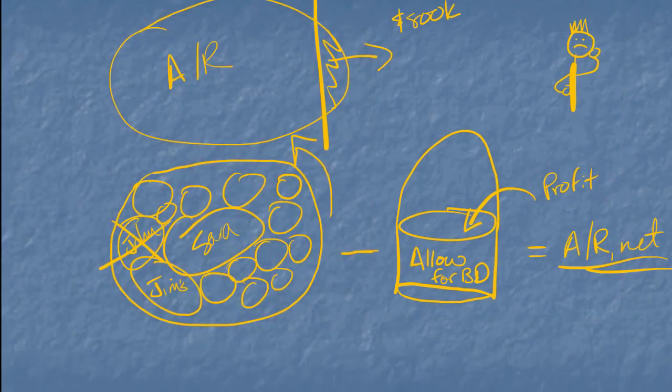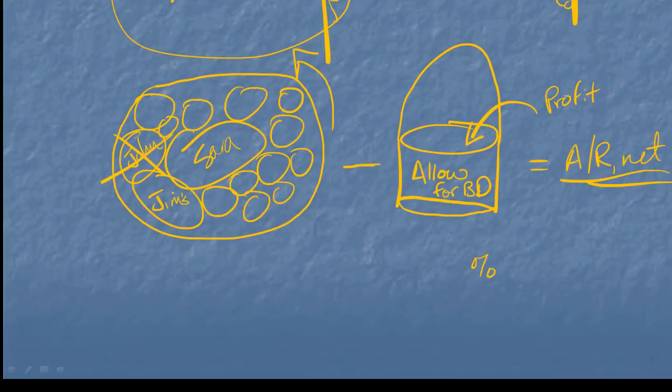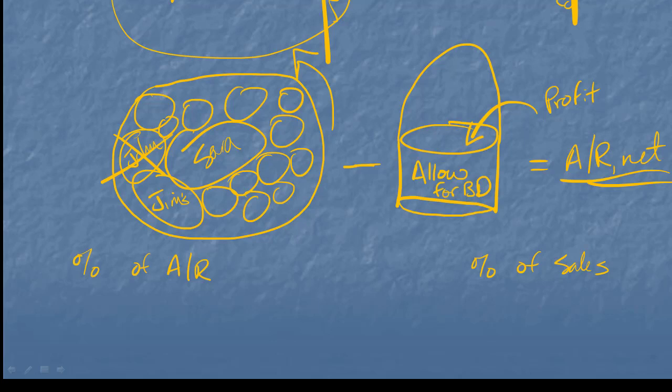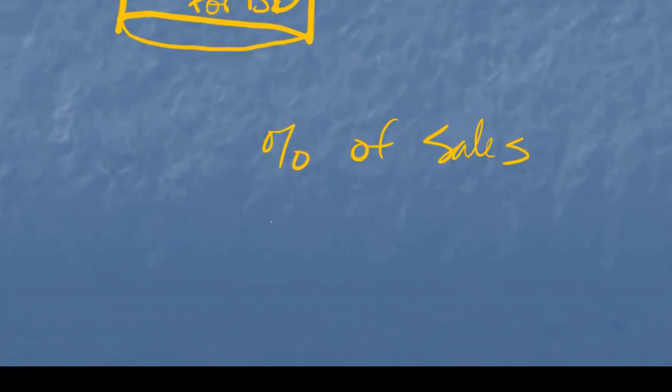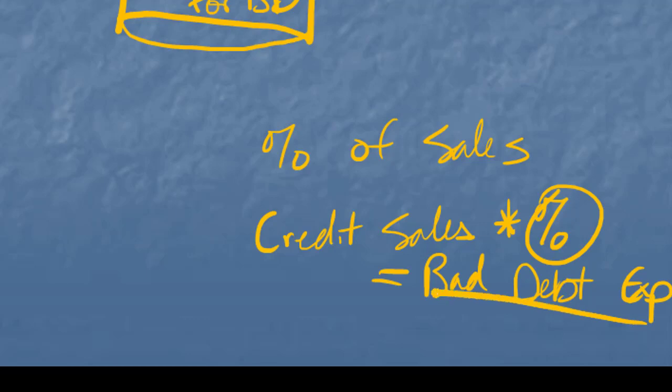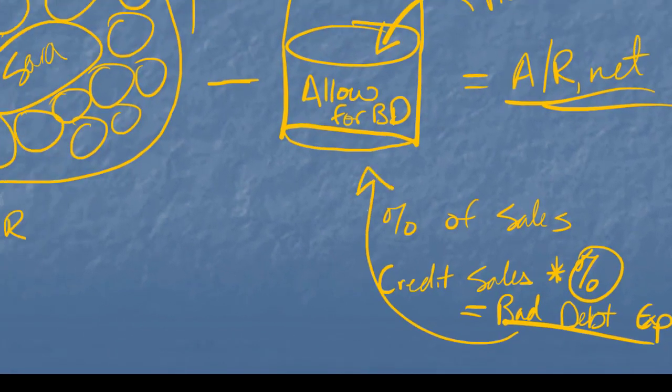We do that with one of several methods. The two most common are the percent of sales and the percent of accounts receivable. Now they're both very common methods, but they work very differently. The percent of credit sales method says, well, how much did we sell on credit? So we take our credit sales times a percentage. We think of all those credit sales, we think this percent is going to rip us off. And that gives us bad debt expense. And whatever that bad debt expense number is, that's what we add to this bucket. So we're going to add to the bucket.